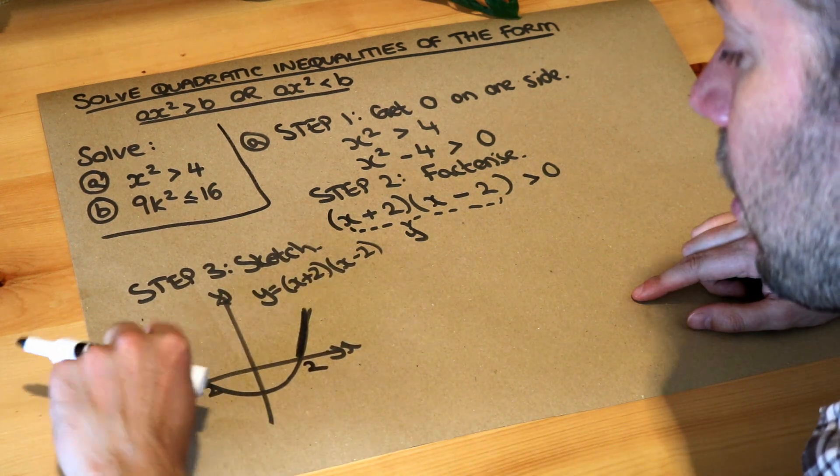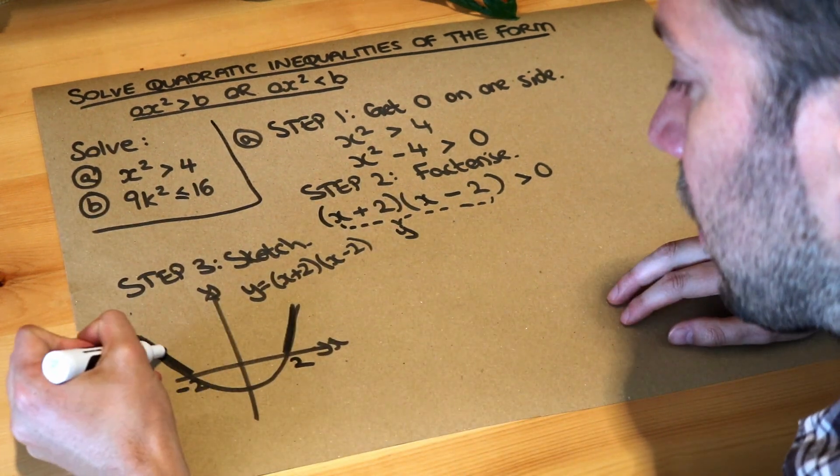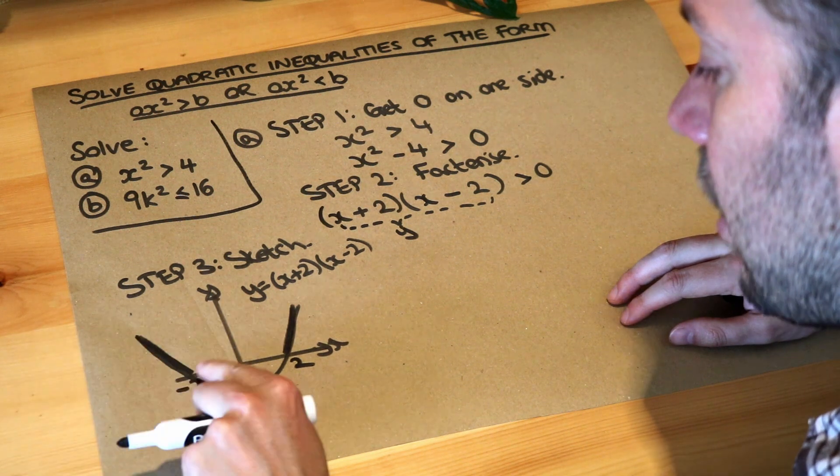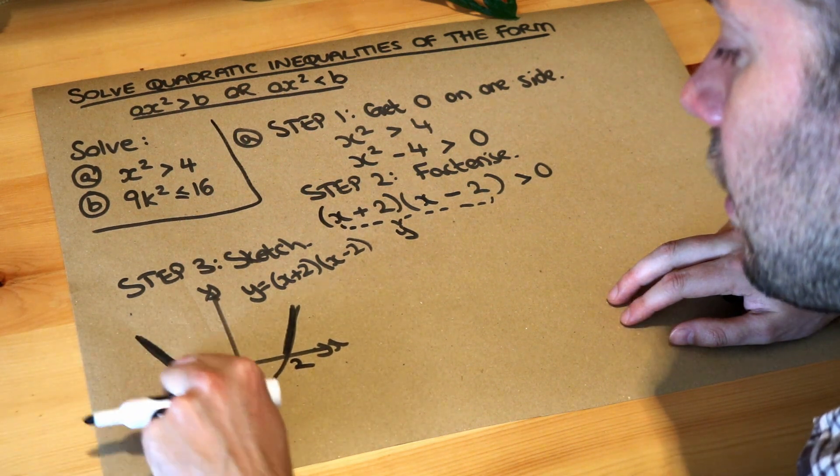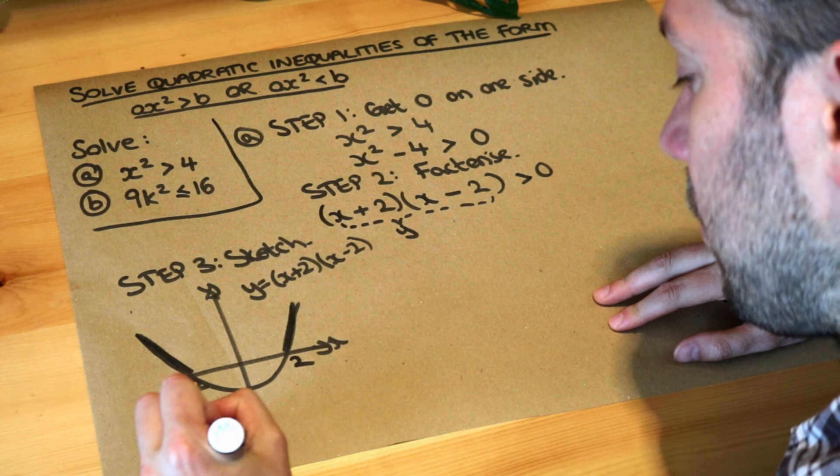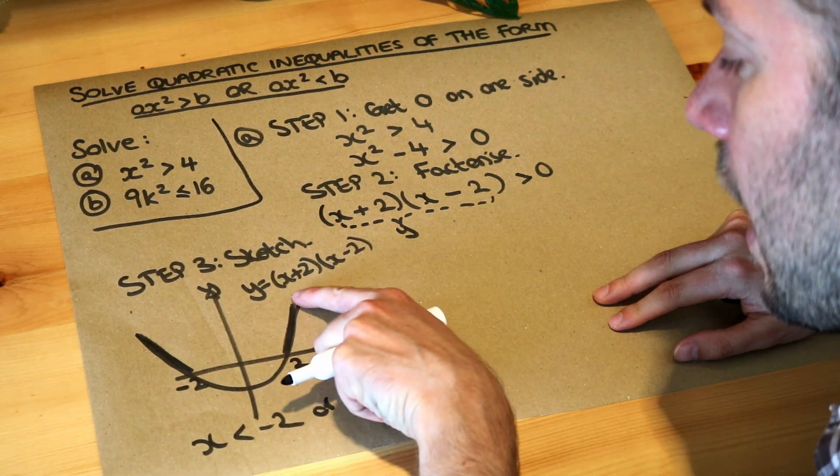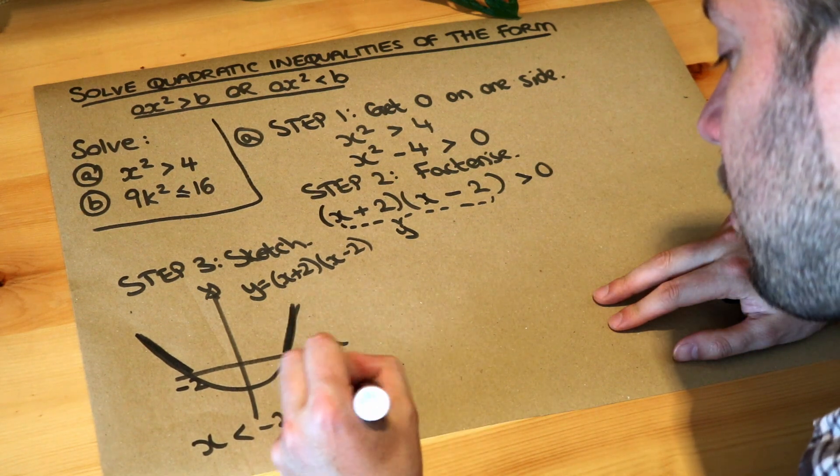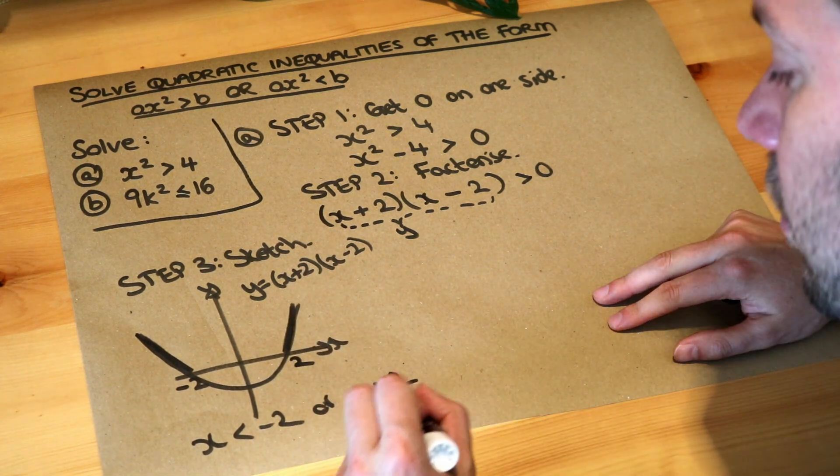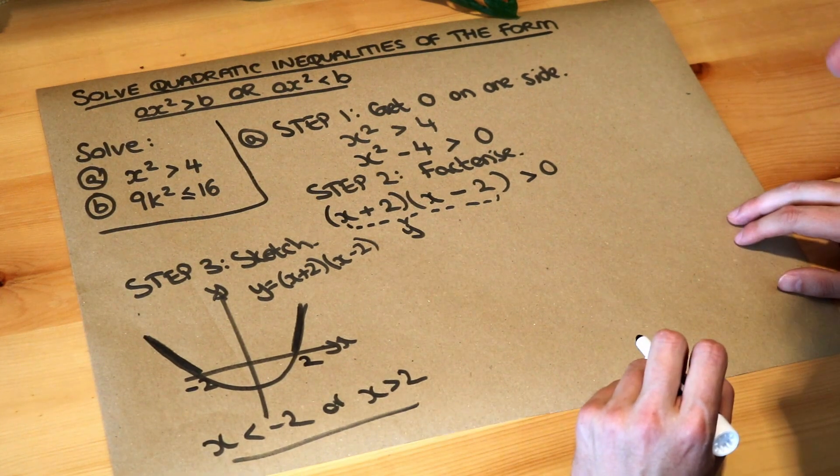What can we say about this part of the line? Well, anywhere on this line, the x value is less than minus 2, or we're in this part of the tail where any part of this line the x value is greater than 2. So that is the final solution. So that's the answer to A.